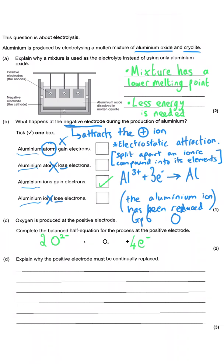This is likely to be one mark for the correct substances — O²⁻ and the electron — and then a second mark for the correct balancing with the 2 and the 4e⁻.